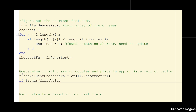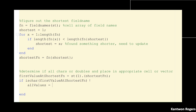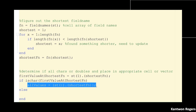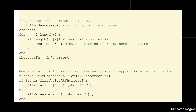Now I want to say: if `ischar(first_value)`, then I want all of my values saved inside curly braces — so `{st.(shortest_field_name)}` — else, meaning it's a double, I do the same thing but put them in square brackets: `[st.(shortest_field_name)]`. At the end of this I have either a cell array of char values or a vector of double values.